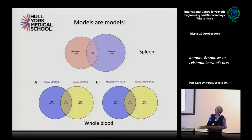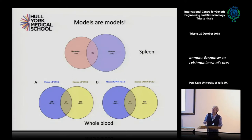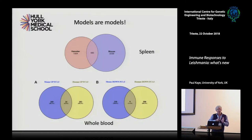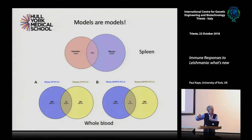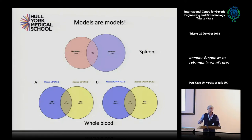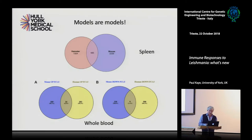What would happen if we compared human spleen with hamster or mouse spleen, or human liver with mouse liver? Unfortunately we just don't have that data. That's something to look forward to over the next year or two as people collect it — to see how these pictures change measuring organ-per-organ across model species versus human disease. And of course this is visceral leishmaniasis; what about asymptomatics versus PKDLs, Brazilian versus other forms of visceral leishmaniasis?